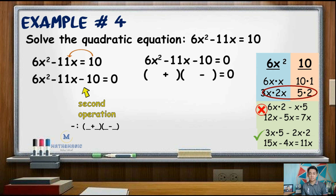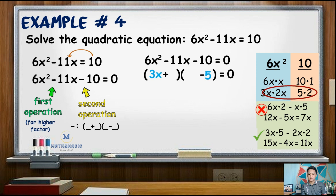Our concern now is where to place each of these factors. Since the first operation is minus, the larger product should be negative. So we will place 5 on the difference term so that when multiplied it gives negative 15x. Placing the remaining terms, we have quantity 3x plus 2 times quantity 2x minus 5 equals 0.